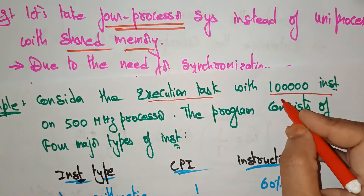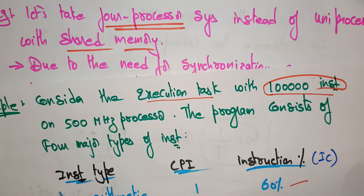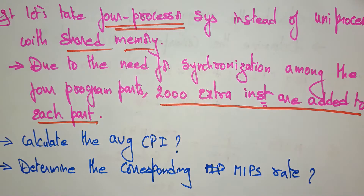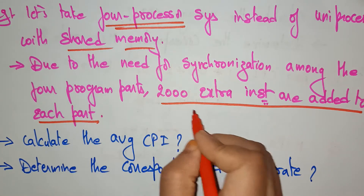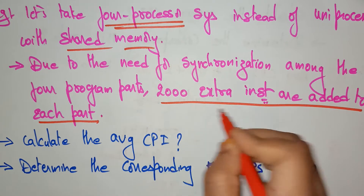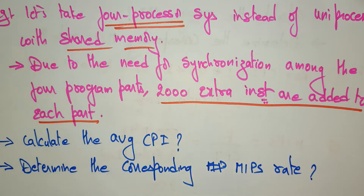The complete program consists of 1 lakh instructions. For this 1 lakh instruction program, I am using 4 program parts, and each program part has 200 extra instructions added. This is the only modification from the previous problem.